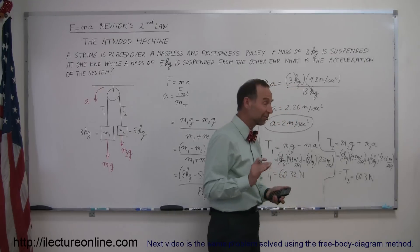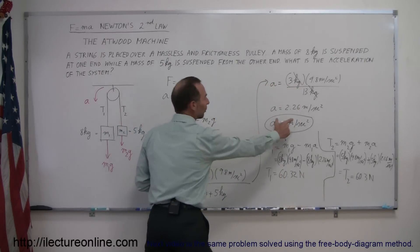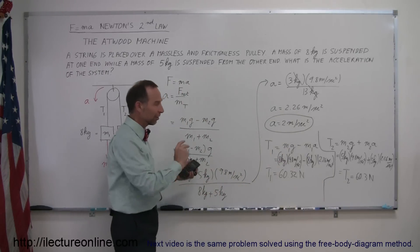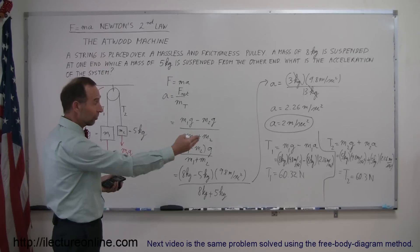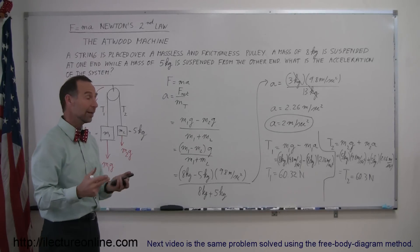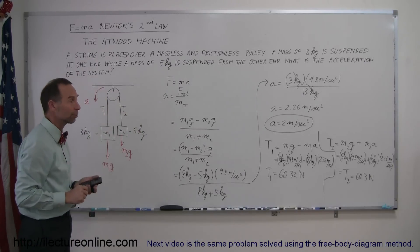My calculator says exactly 60.3 newtons. That's because I rounded off my acceleration result to 2.26, and so there's a slight difference between the two, but that's just simply a rounding error. So you can see indeed, ignoring the rounding error, that tension 1 equals tension 2, meaning the tension is the same on both sides of the equation.